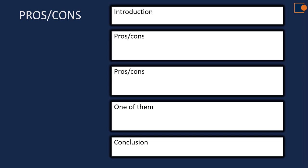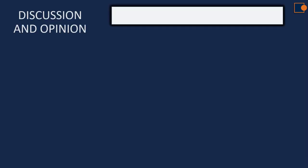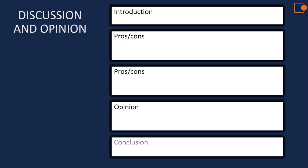For the discussion plus opinion structure, there is always an introduction and conclusion. The difference is that the first two body paragraphs should be only discussion — one for pros, one for cons. The third body paragraph should be your own personal opinion, stating which side you support and why. If you believe there are more advantages than disadvantages, state why, or vice versa. Then write your conclusion.